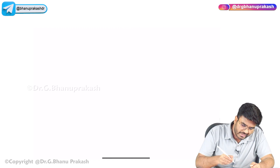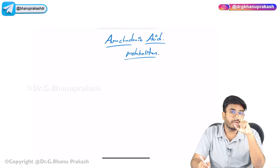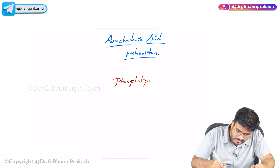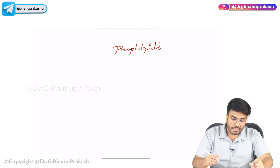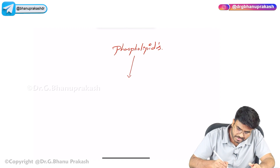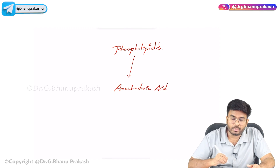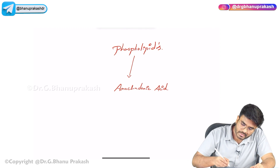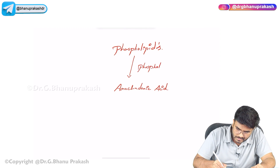Every cell is made up of cell membranes. In the cell membranes, there is something called phospholipids. The phospholipids present in the cell membrane, during inflammatory conditions, when they are acted upon by an enzyme, they are going to break down into a substance called arachidonic acid. The enzyme that helps in this breakdown is called phospholipase — phospholipase A2 or phospholipase C.